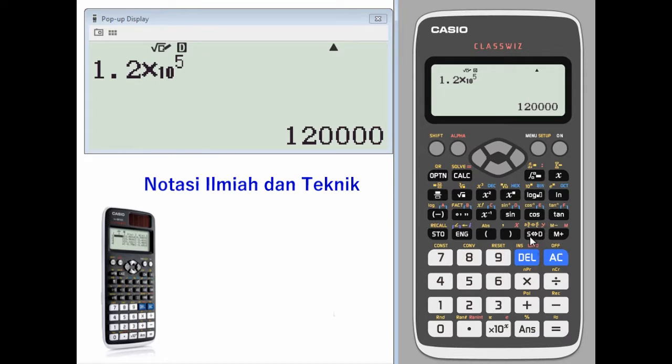Engineering Notation will take your solution and turn it into an engineering notation, moving the decimal three places over every time you press it. If you press shift and engineering, it will go in the opposite direction.